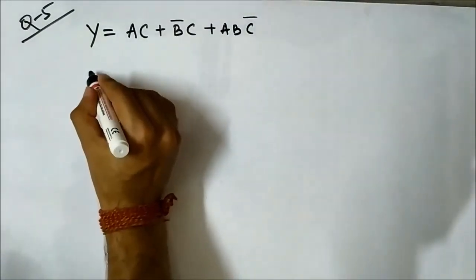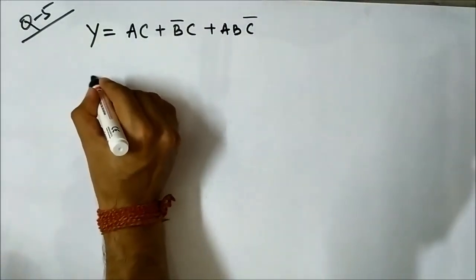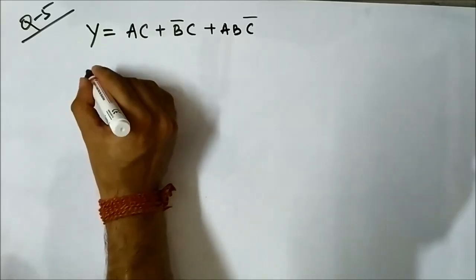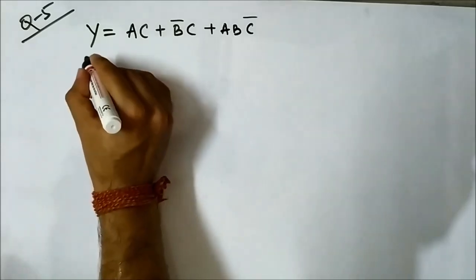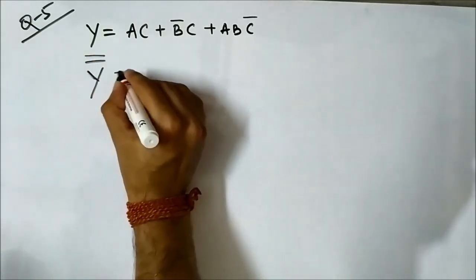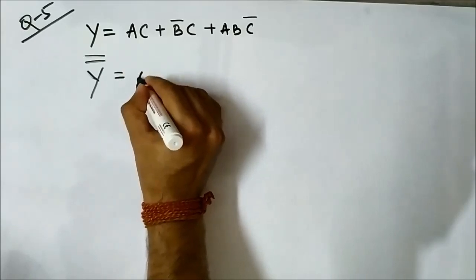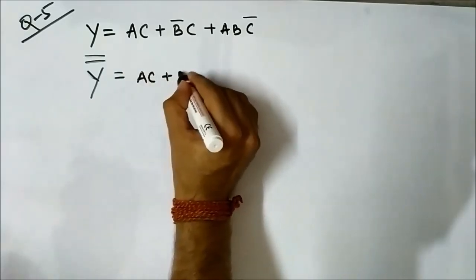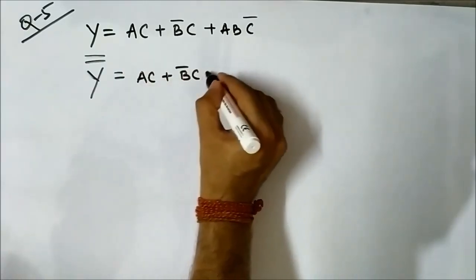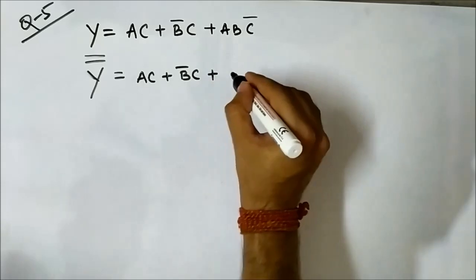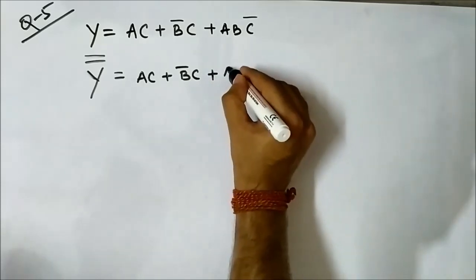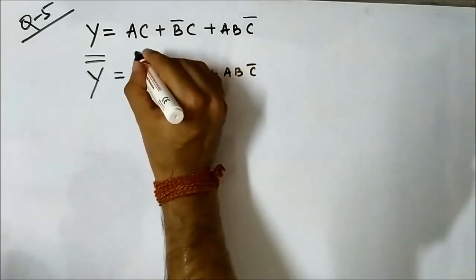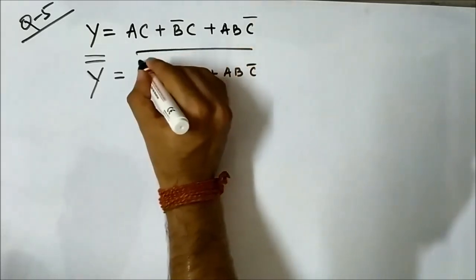We have to apply double complement to manipulate and modify the expression in a better way. So we take the double complement of B̄C + BC̄ + ...